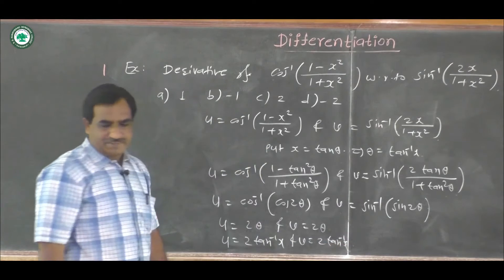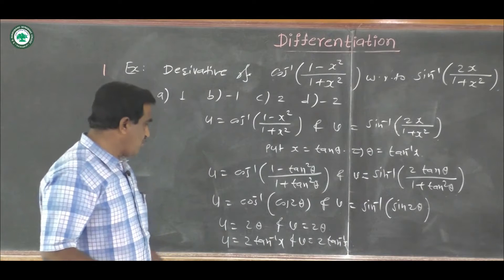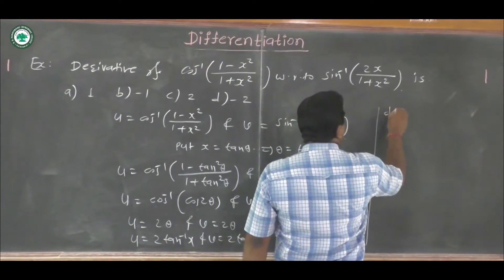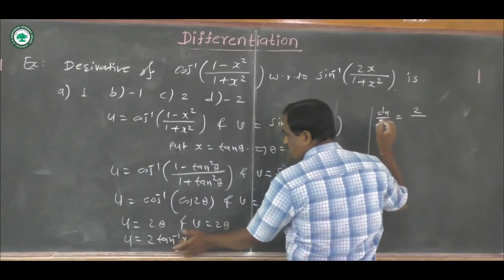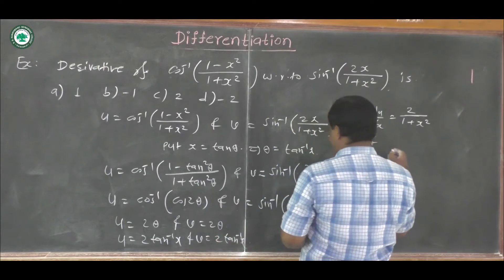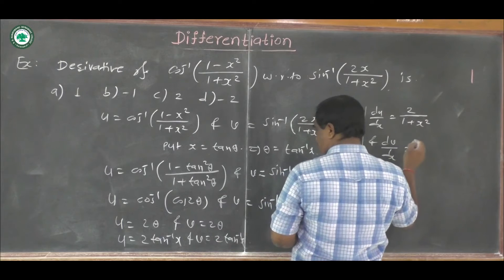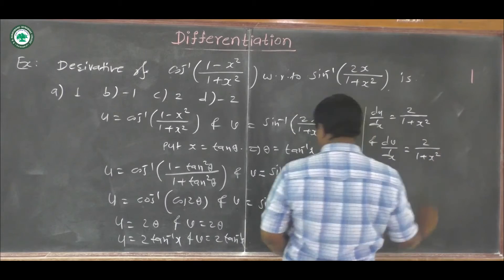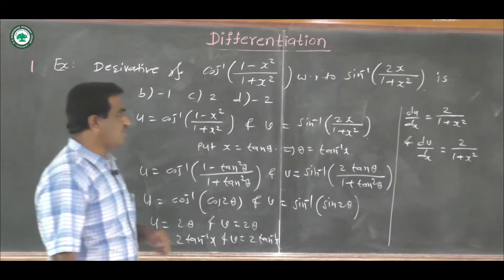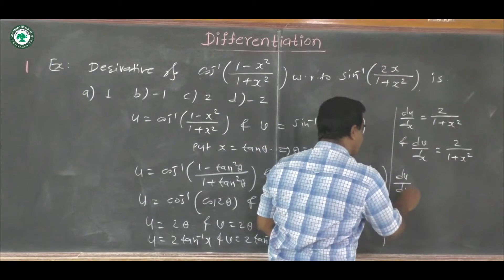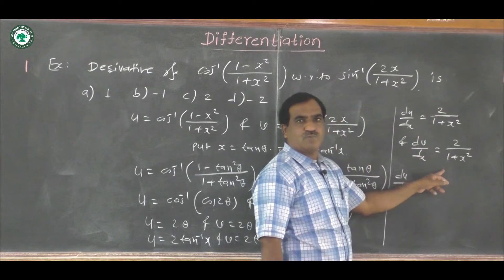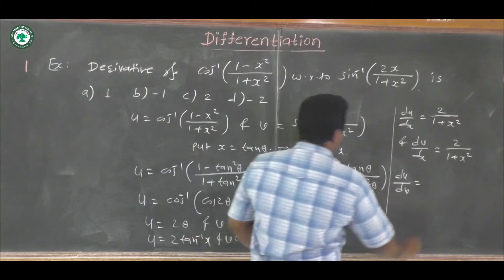Now taking derivatives: du by dx equals 2 into derivative of tan inverse x, which is 1 upon (1 plus x square), so du by dx equals 2 upon (1 plus x square). And for v equal to 2 tan inverse x, dv by dx equals 2 upon (1 plus x square). Now using du by dv equals (du by dx) upon (dv by dx), we get (2 upon 1 plus x square) divided by (2 upon 1 plus x square) — these cancel, leaving du by dv equal to 1.